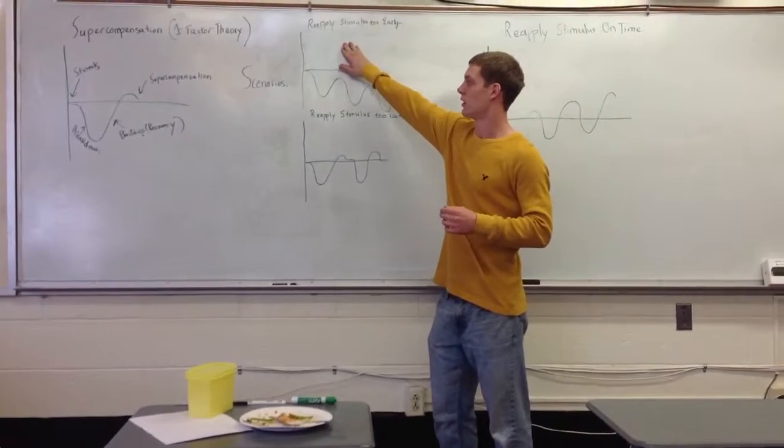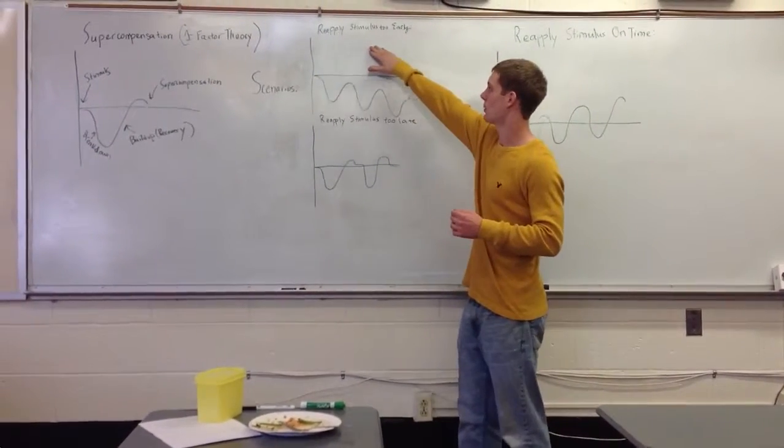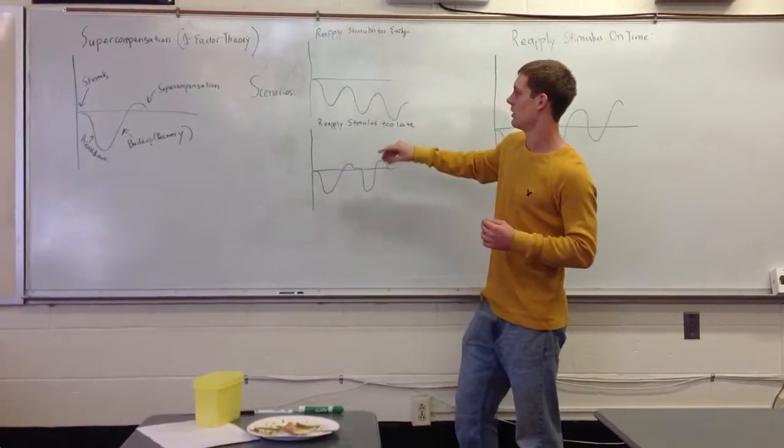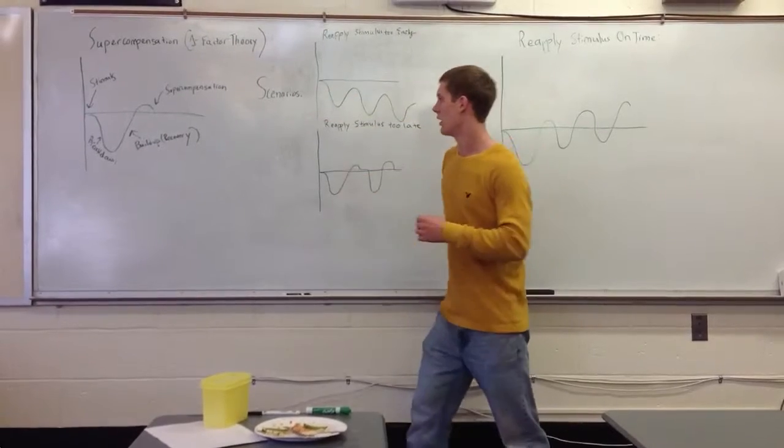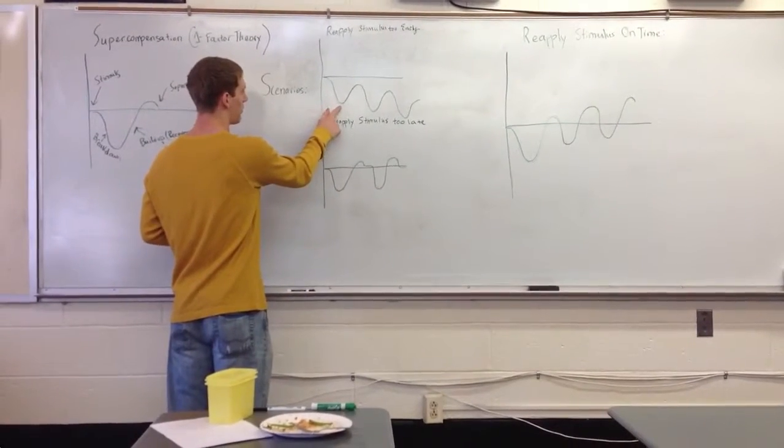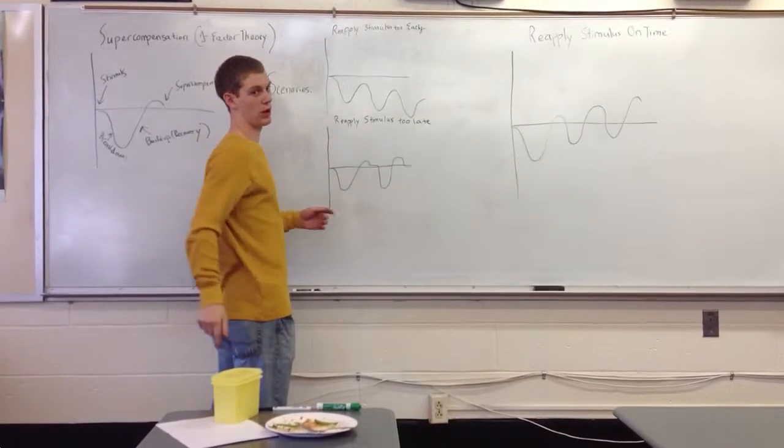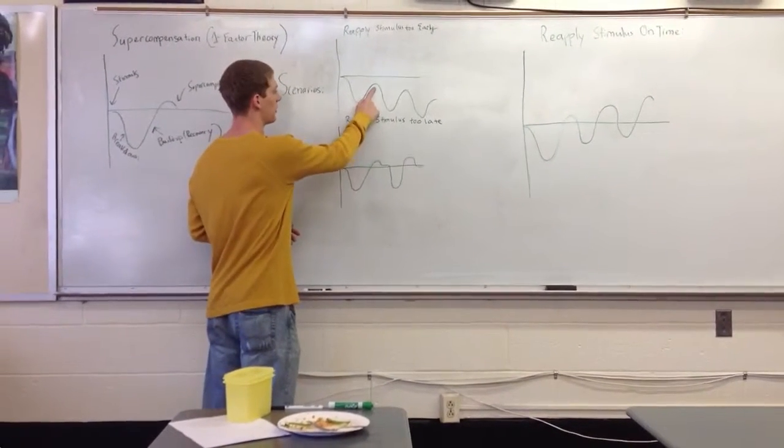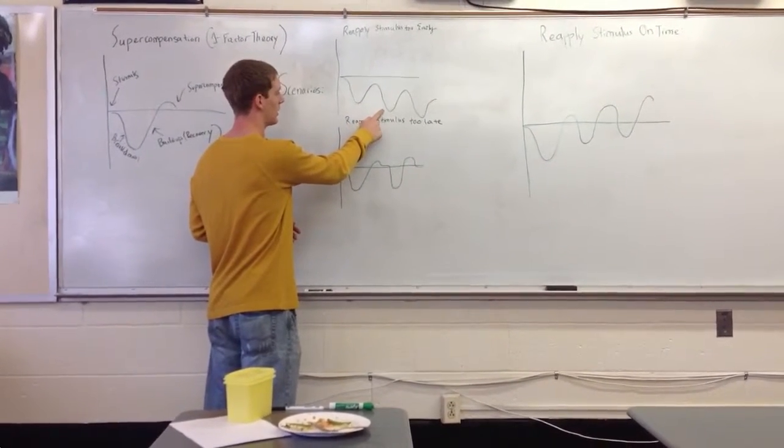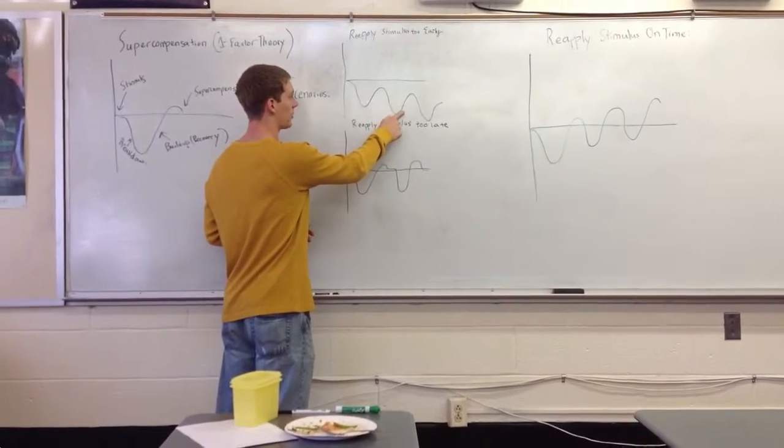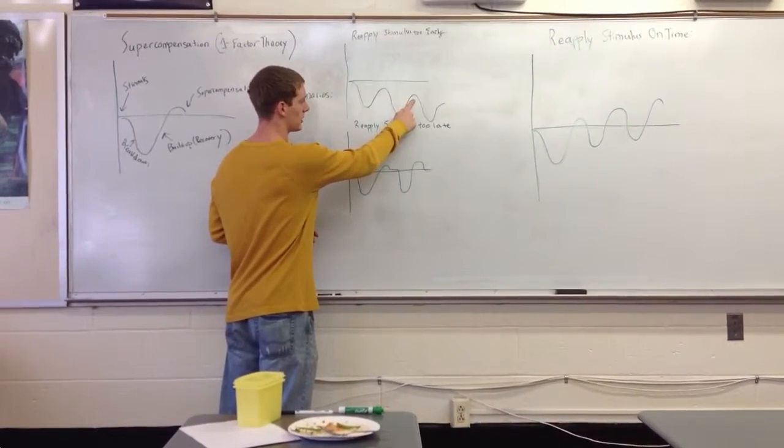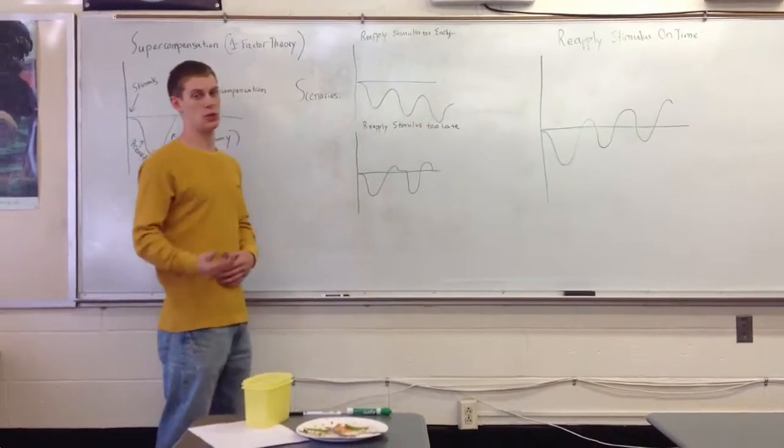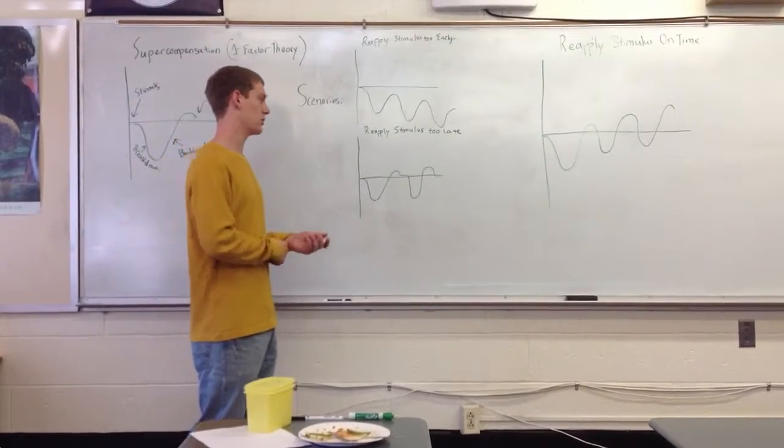Here are the scenarios that can happen. When we reapply the stimulus too early, we see a breakdown and then recovery, but we don't get to the point of supercompensation, so we're breaking back down again and going up without waiting for supercompensation. We're constantly actually getting weaker. We're not recovering our bodies completely.